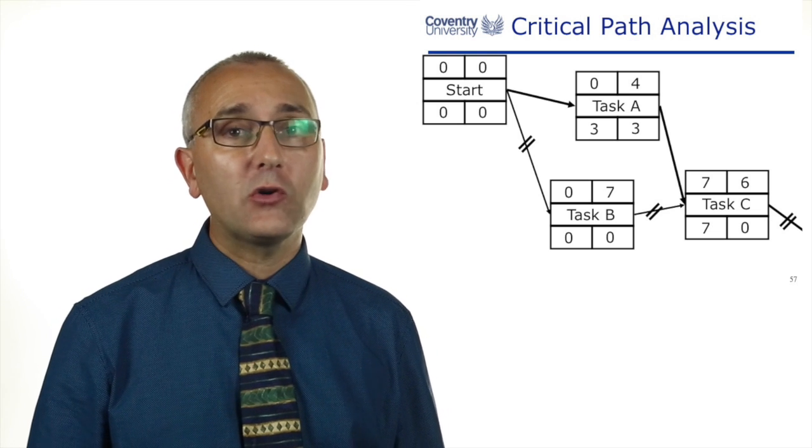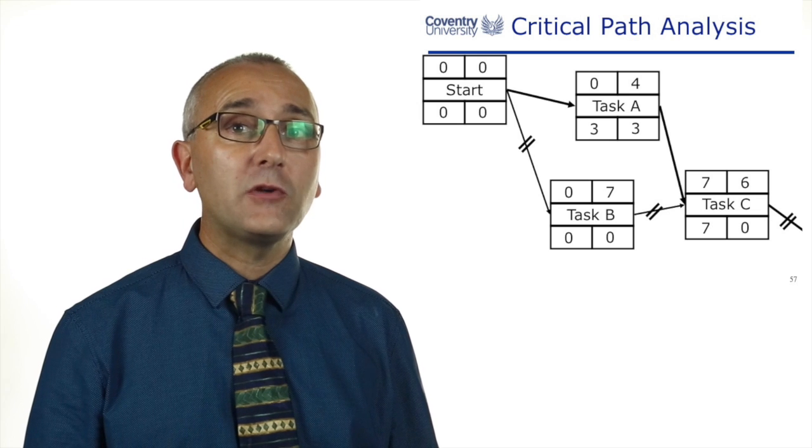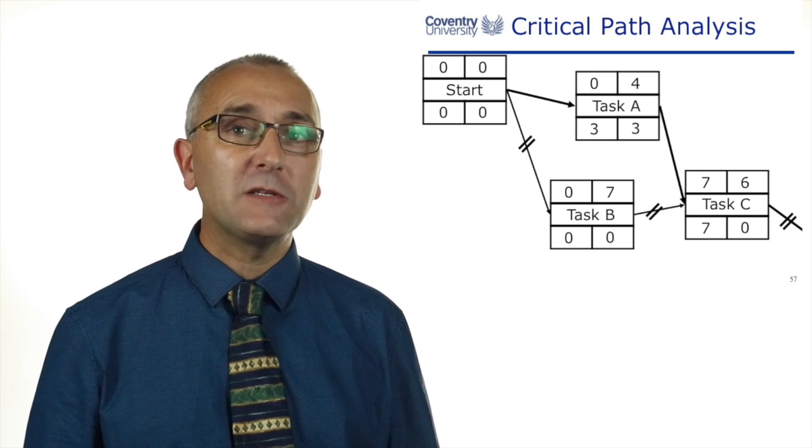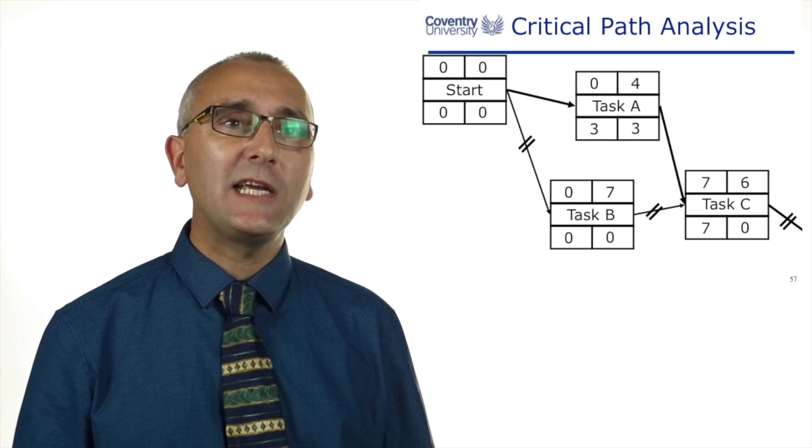We can see here that task A is not critical. It's got an early start of zero, a latest start of three, so therefore it's got three days of float. It has to start somewhere between day zero and day three.